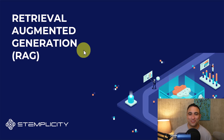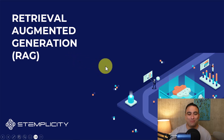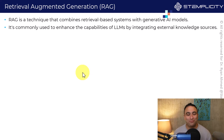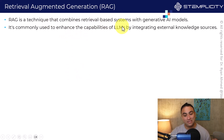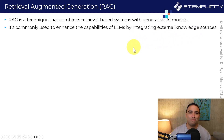Welcome to this lecture where we're going to cover a super powerful technique known as RAG, or Retrieval Augmented Generation. The name looks complicated or fancy, but don't worry — it's actually pretty straightforward. RAG is a technique that combines retrieval-based systems with generative AI models, and it's commonly used to enhance the capabilities of large language models, or LLMs, by integrating external knowledge sources.